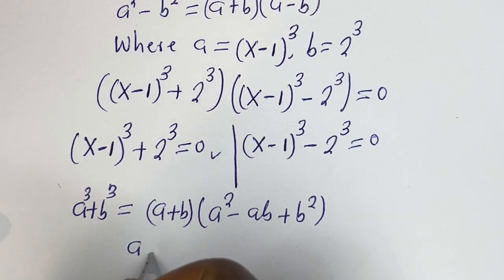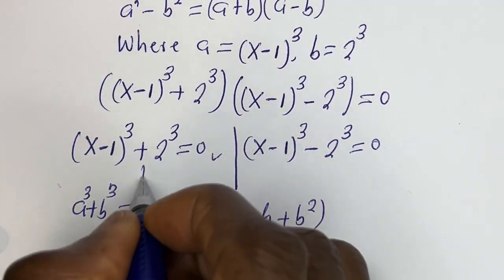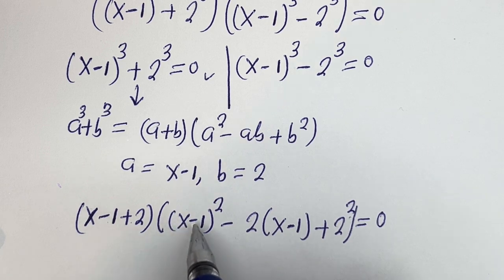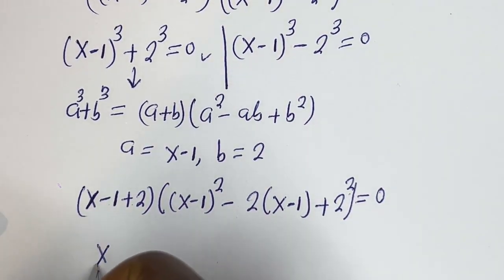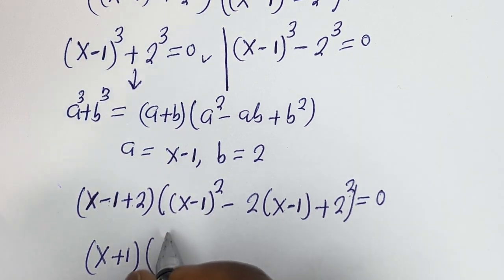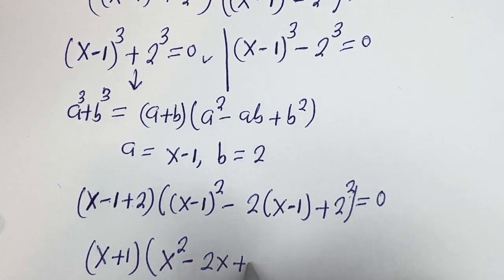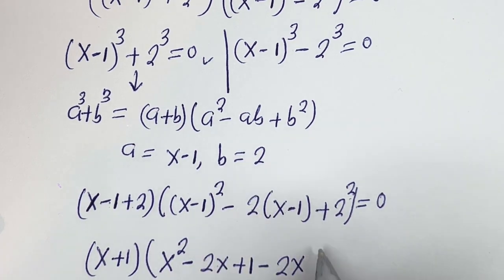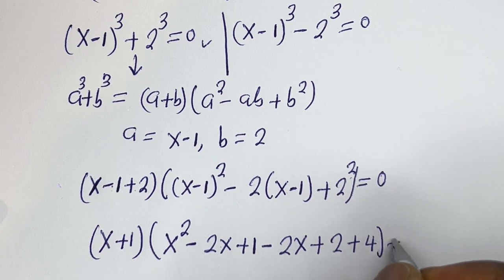In this case, a is equal to x minus 1, b is equal to 2. Considering the first case, this is (x minus 1 plus 2) bracket (x minus 1) squared minus 2 times (x minus 1) plus 2 squared, equals 0. Expanding: (x minus 1) squared is x squared minus 2x plus 1, minus 2 times 1, which is minus 2, then plus 2 squared, that is 4, equals 0.